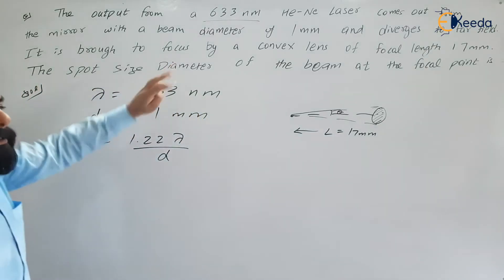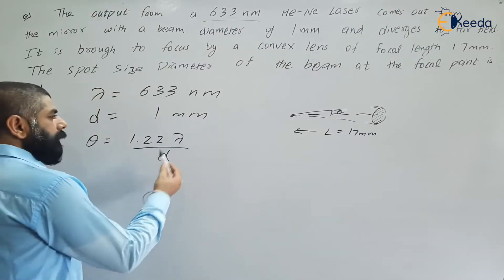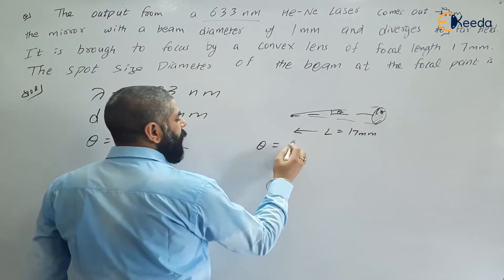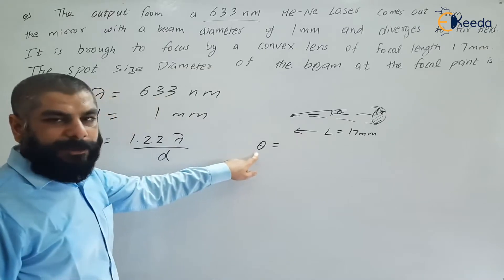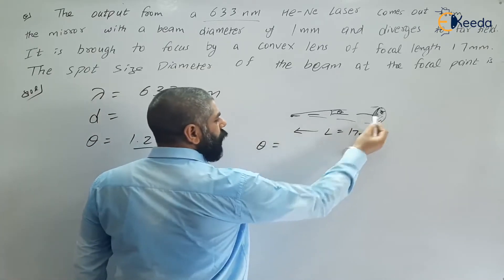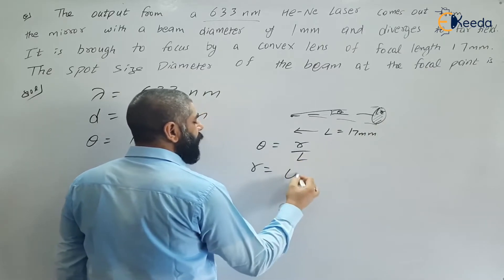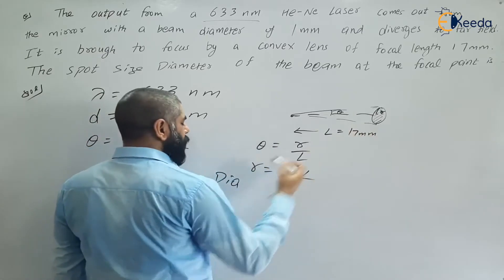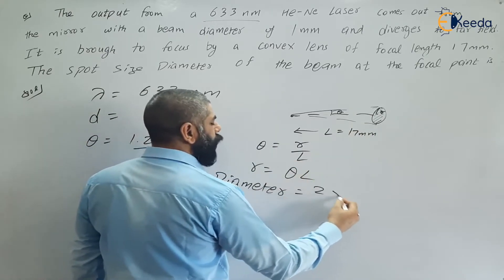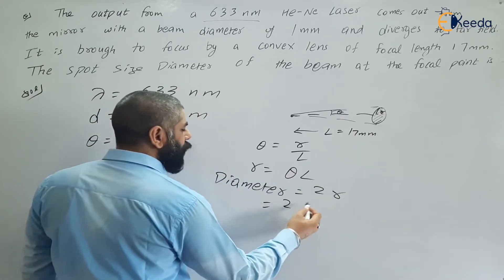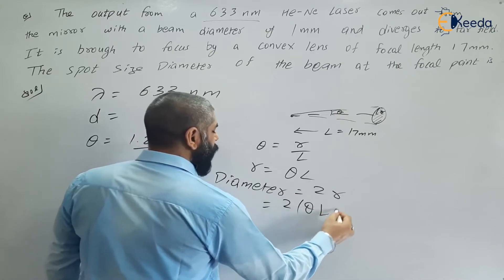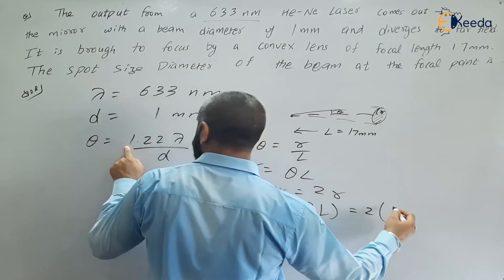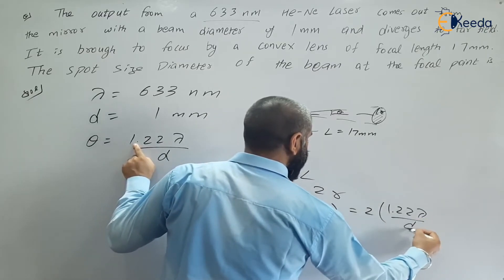The diameter of the circular spot is asked. The relationship is: tan(theta) ≈ theta = R/L for small angles, so theta equals 1.22 lambda by d, and radius equals theta times L. The diameter of the circular spot is given by 2 times the radius, which equals 2 times theta times L, where theta is the angular spread. So diameter equals 2 times 1.22 lambda by d, multiplied by L.